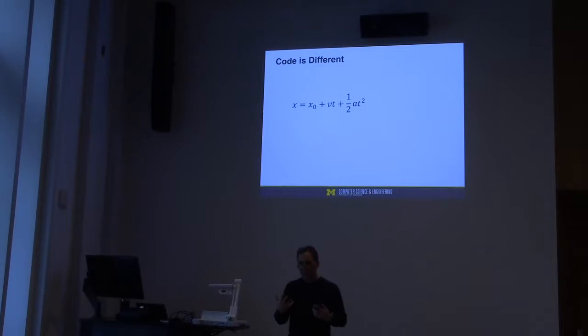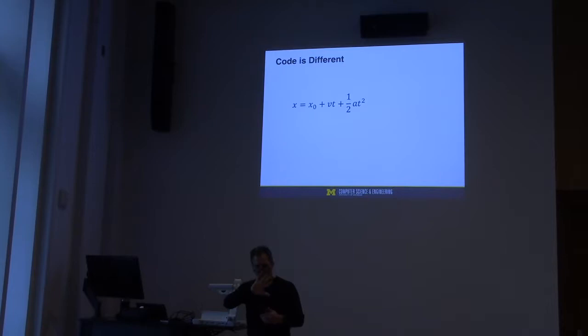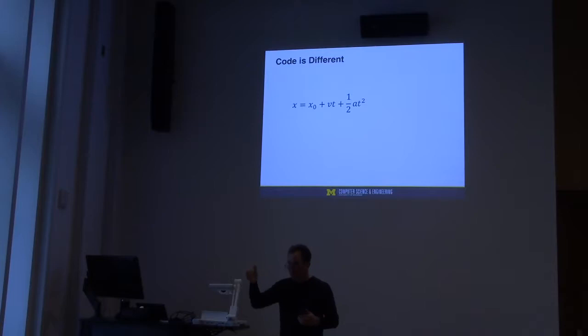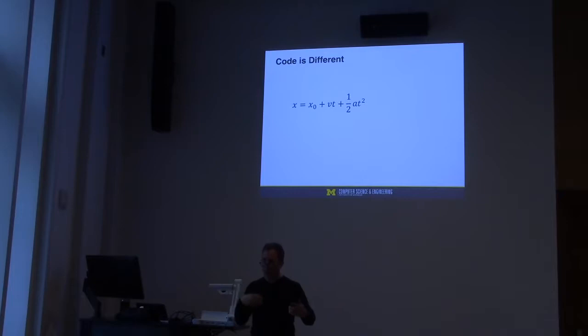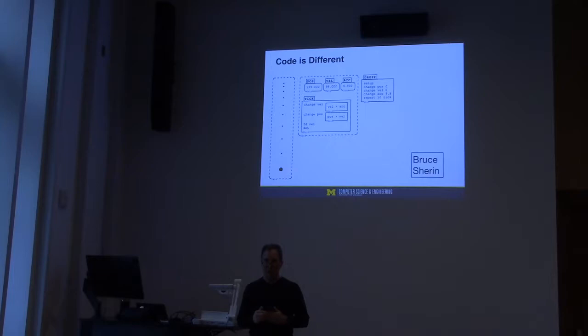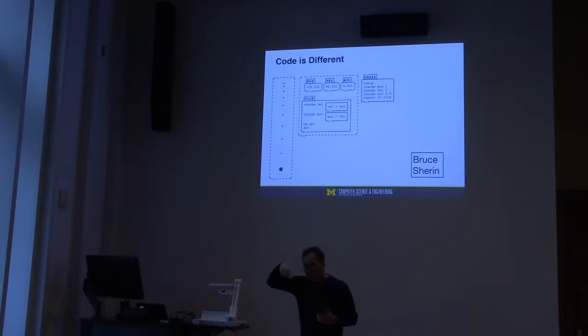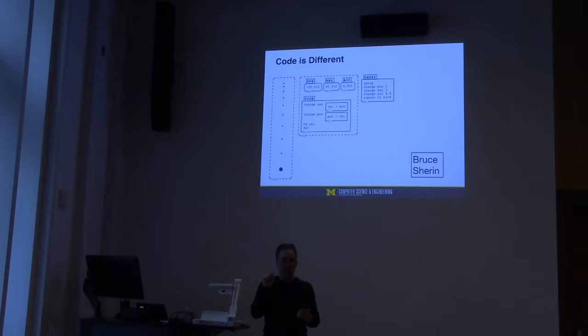Bruce Sherin did wonderful work helping us understand why code is different from learning with equations. Most of you have seen the equation where current position equals initial position plus velocity times time plus one-half times acceleration times time squared. When you learn with an equation, you learn a sense of balance — given all variables but one, you solve for the other. Bruce taught the same thing using code in Boxer: for every tick of the clock, change velocity by acceleration, change position based on velocity, move the object and make a dot — giving a falling object.